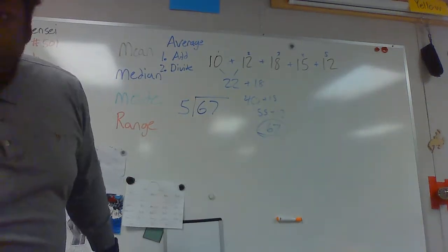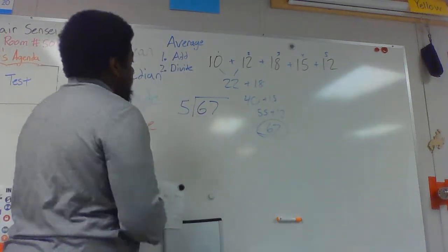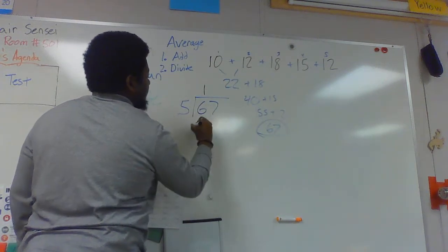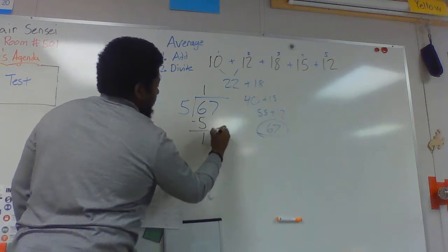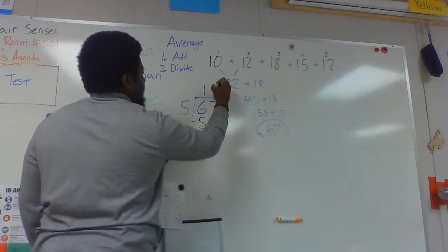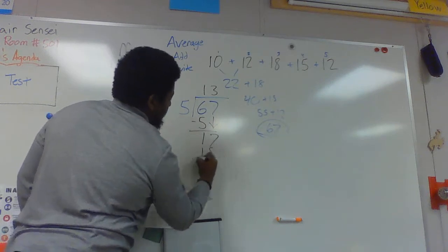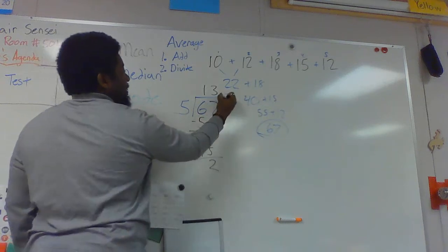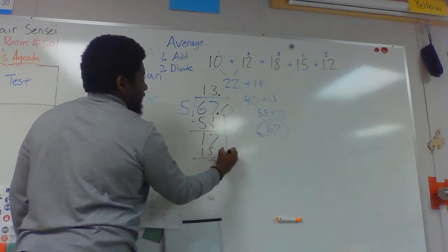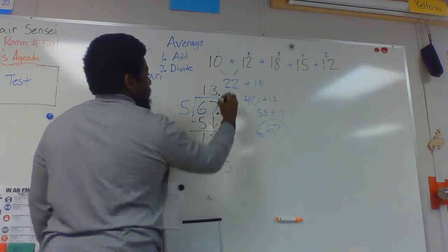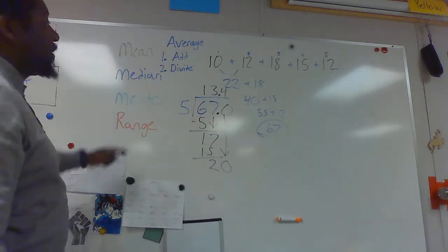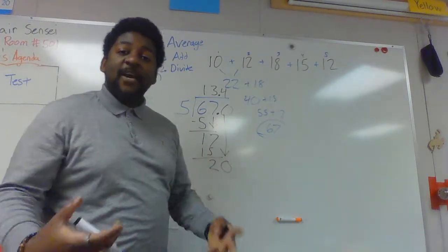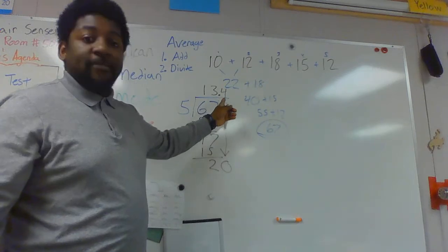Actually, I'll use this in a different color, so you guys can see that better. Five goes into six one time. Five times one is five. Six minus five is one. Five goes into 17 three times. That's 15. Seven minus five is two. Decimals and my zero, so I can keep finishing my division. Five goes into 20 four times. So the mean, or the average of these five numbers, or the very center of those five numbers, is 13.4.